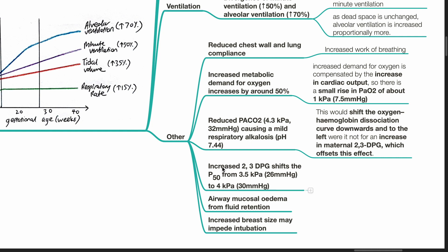The increased 2,3-DPG shifts the P50 from 26 mmHg to 30 mmHg. There is airway mucosal edema from fluid retention. Increased breast size may impede intubation.